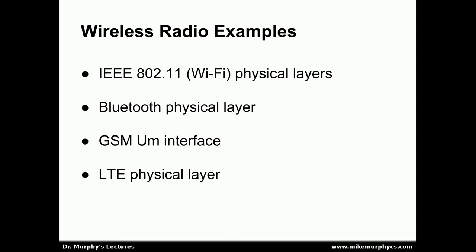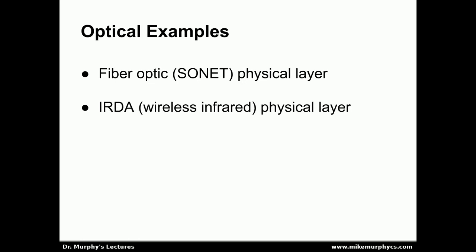In wireless devices, we have other physical layer standards. For Wi-Fi or 802.11 devices, there are a couple of different physical layer specifications depending on the standard revision. Bluetooth specifies its own type of physical layer, as does the GSM Mobile Um interface for 3G cell phones. For 4G LTE cell phones, there's another LTE physical layer with its own specifications. Fiber optic also has specifications — for example, wide area fiber optic systems, or SONET rings. And even infrared light-based wireless devices (IrDA) have a physical layer specification.